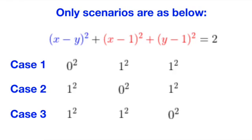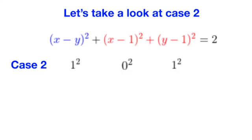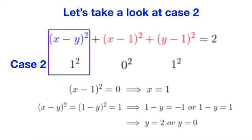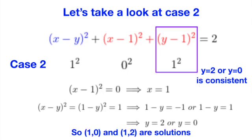Let's take a look at case 2, and I will leave case 1 and case 3 as exercises if you are interested. We can start from x minus 1 squared equals 0, to conclude that x must be 1. Having found that x equals 1, we can now look at x minus y squared equals 1. Taking square root, we can see that either y equals 2 or y equals 0. Hence, we have found 2 solution pairs for case 2, which are 1,0 and 1,2.